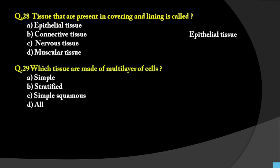Question number 29: Which tissue is made of multiple layers of cells? Options are simple tissue, stratified, simple squamous, or all. Where multi-layers are discussed, it is called stratified. Where a single layer is present, it is called simple. So the answer is stratified.